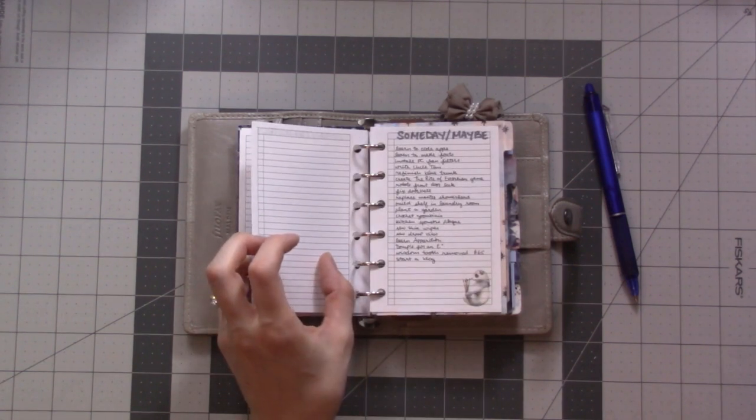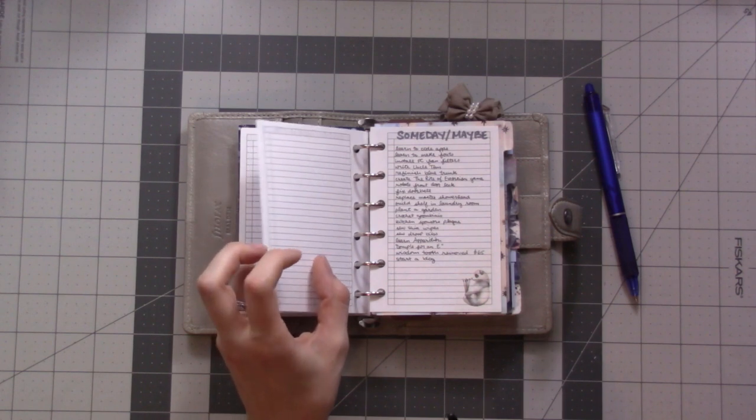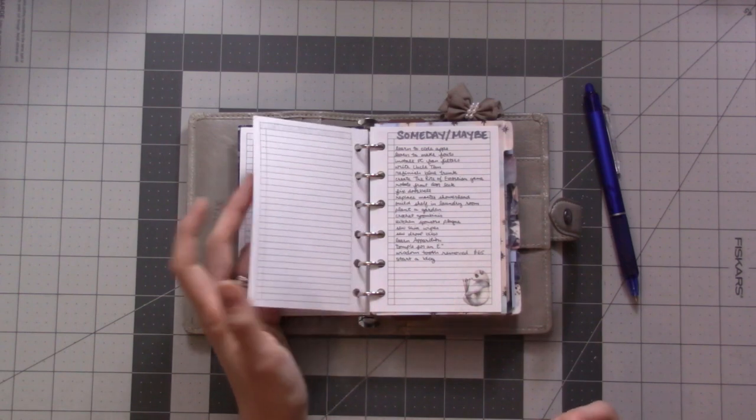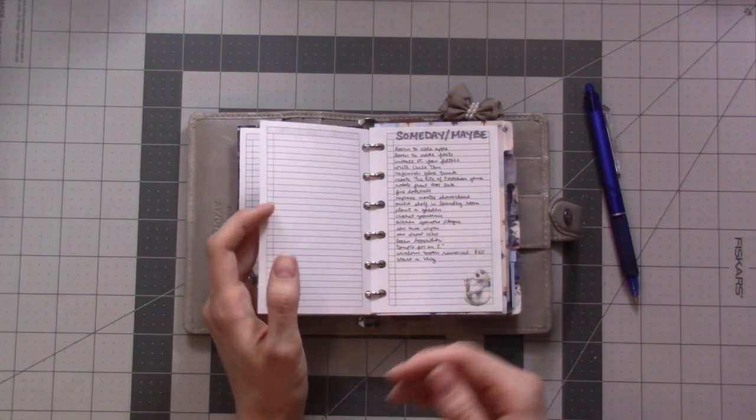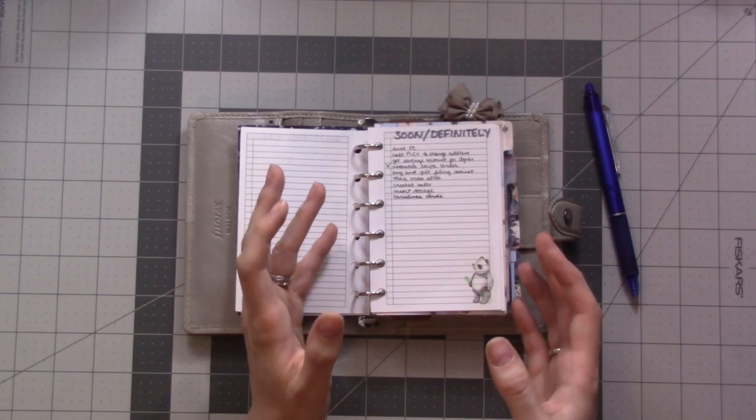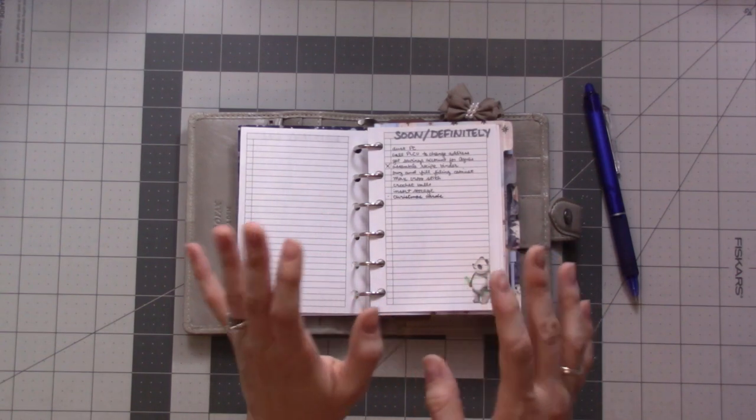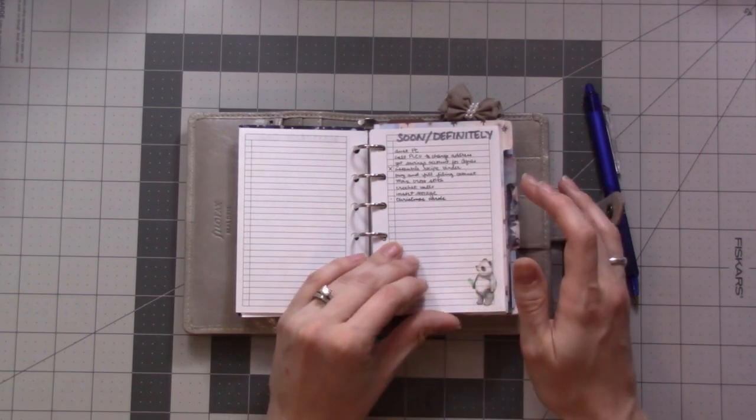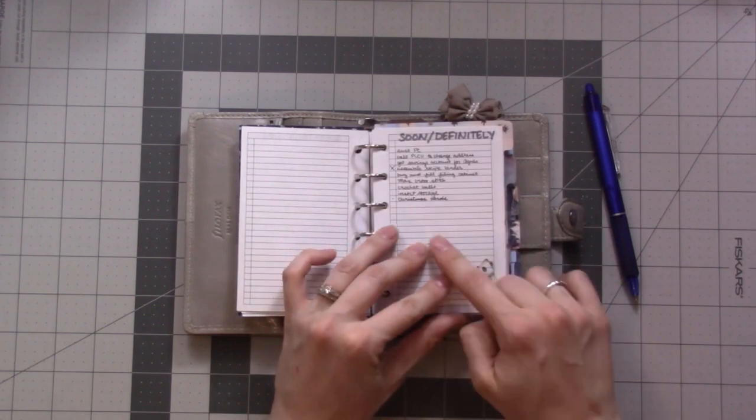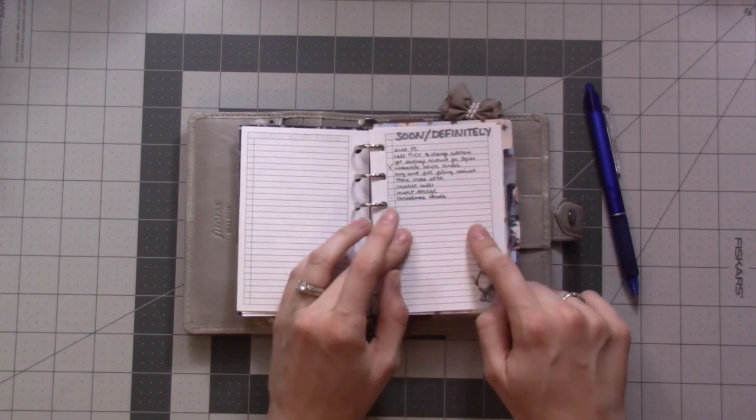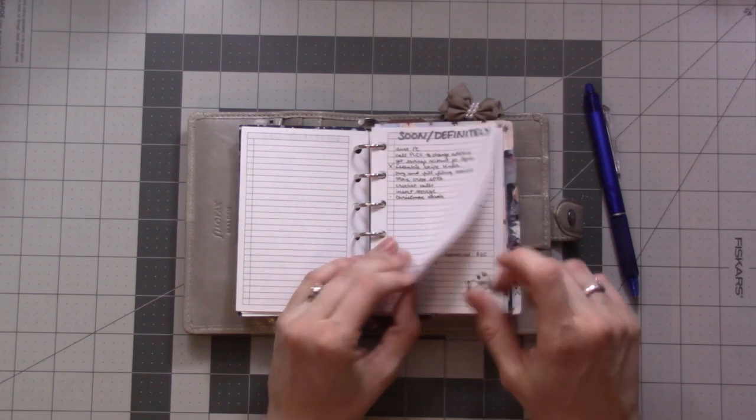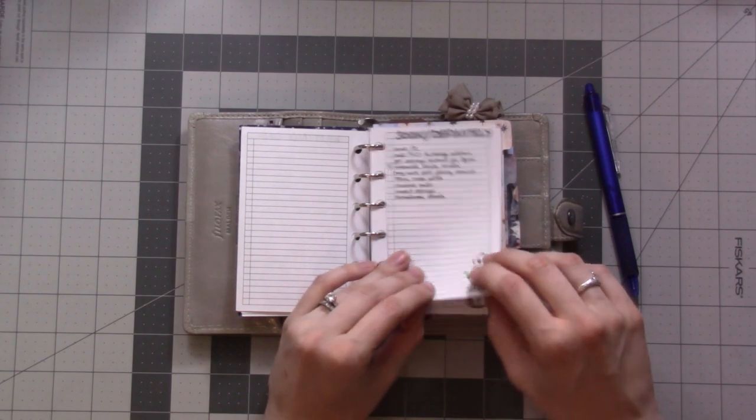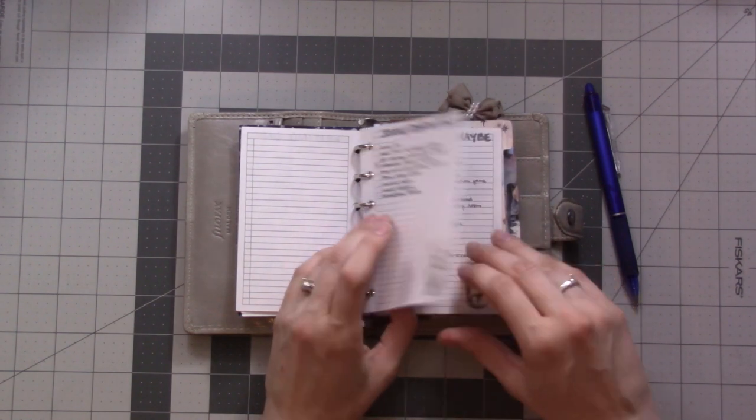This is the someday maybe list that's part of GTD. I was looking at different categories of projects and there were some that I wanted to put on a currently projects list. I keep trying to make some sort of current projects list but it's not really coming together right. So instead I've got someday maybe and a soon definitely list - these are things I really do need to do but I'm not currently working on them yet.